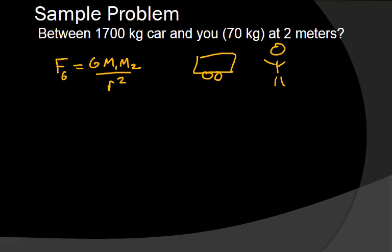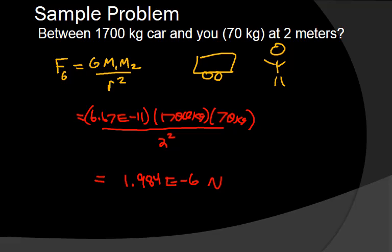Now let's try something more massive — a 1,700 kilogram car with our mass of 70 kilograms, two meters away. How much gravitational force would there be? We should get 1.94 × 10⁻⁶ newtons. Again, a very, very small amount of force — you're not going to be able to feel that.